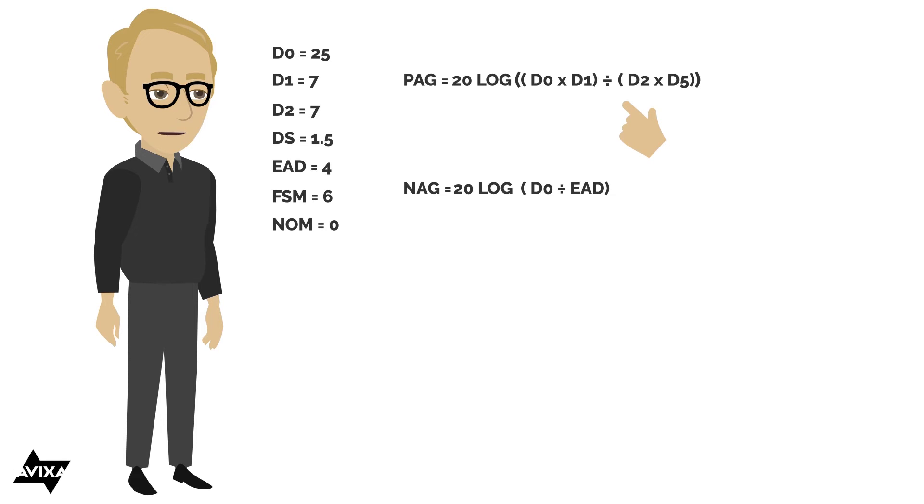So let's go ahead and fill out our numbers here, and I want to make sure that, and I do this a lot of times, write it out, put all my parentheses in the right place so that I can enter it into the calculator correctly. Okay, so we have 20 times the log of, my two parens, D0, which is the source to listener, times D1, which is the distance from the microphone to the loudspeaker, divided by D2, which is the distance from the loudspeaker to the listener, times DS, and this is the distance from the source to the microphone, and that is 1.5. Now, this can be in U.S. customary, it can be in meters, it could be in furlongs, just as long as you're using the same units.